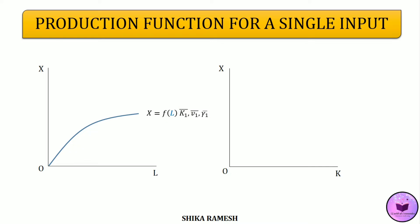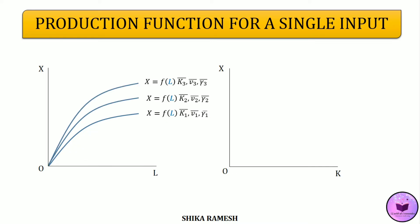Similarly, we can explain the same concept by using capital as the variable input — measuring capital on the x-axis and number of units of output on the y-axis. We again get a similar upward sloping production function, showing that output increases with increase in units of capital, provided all other factors remain constant.